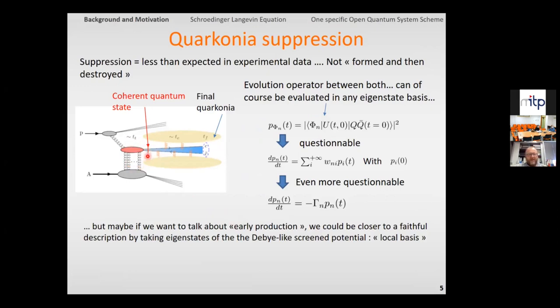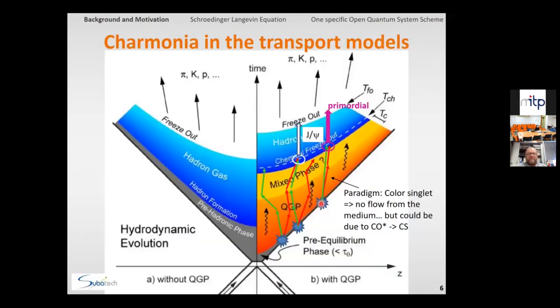But originally, it was not meant to be something that is formed and then later destroyed. And indeed, what is formed at the very early stage of the QGP evolution is some coherent quantum state, which then undergoes many interactions with the medium around. And finally, in the final stage, it is observed as a quarkonia. Then, of course, the evolution operator, even if it is quite complex, is such that the probability to observe any quarkonia in the final stage can be written in this way. And what is rather questionable is whether or under which circumstances this final probability can be written under the differential equation that is some classical master equation. And what is even more questionable is whether we can reduce this master equation to a single diagonal path.